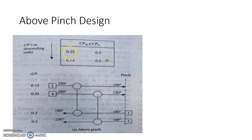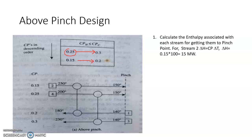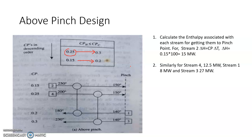It is good practice to write CP values in descending order so you know where to match streams. Since CP of the hot stream must be less than or equal to CP of the cold stream, we can verify that every hot stream has a matching cold stream with a higher CP value. With two hot and two cold streams, no stream splitting is required. Enthalpies: stream 2 = 15 MW, stream 4 = 12.5 MW, stream 1 = 8 MW (40 × 0.2), stream 3 = 27 MW (90 × 0.3).